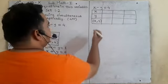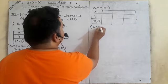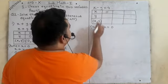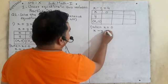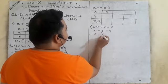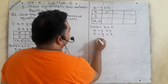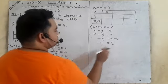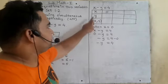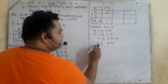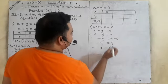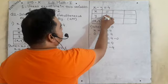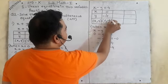Now for the second equation x minus y equals 4, we find three solutions. When x equals 0: 0 minus y equals 4, so minus y equals 4. We want y, so multiply the minus sign to the number: y equals minus 4. The coordinate is (0, minus 4).